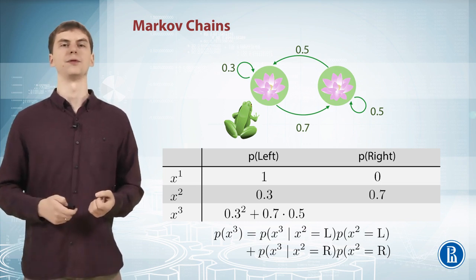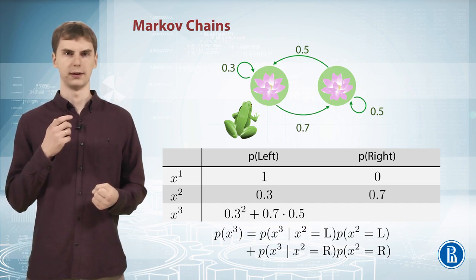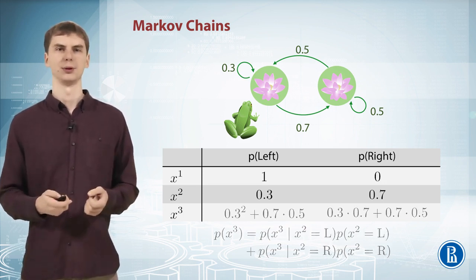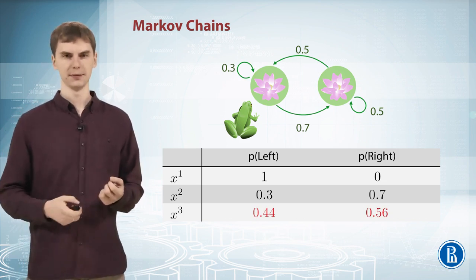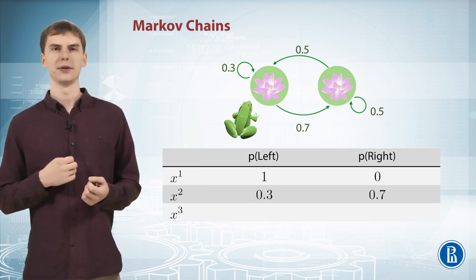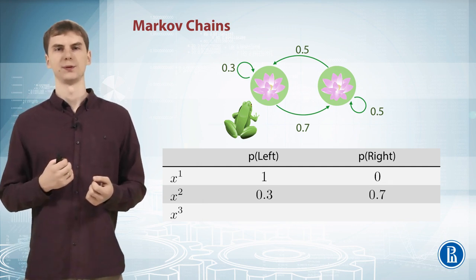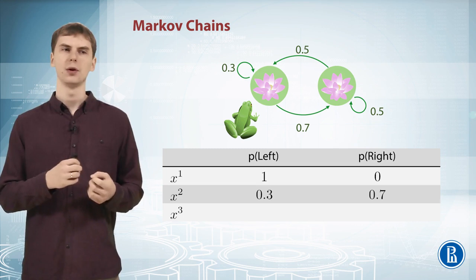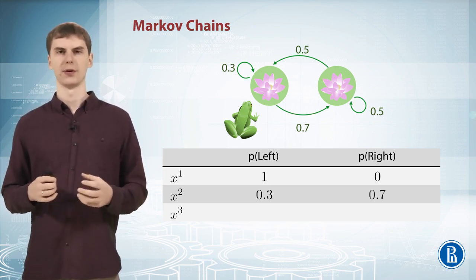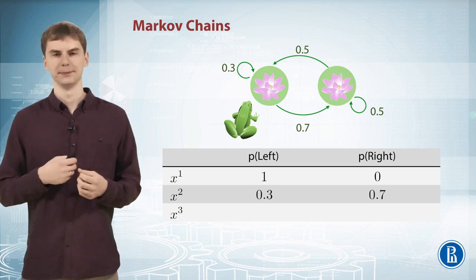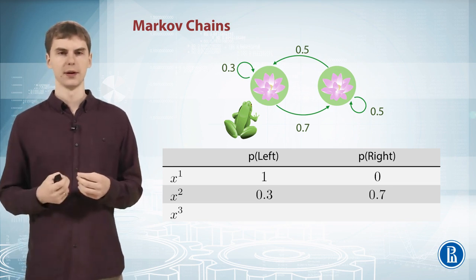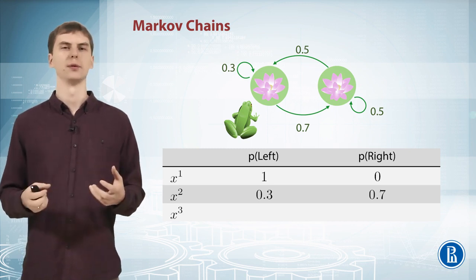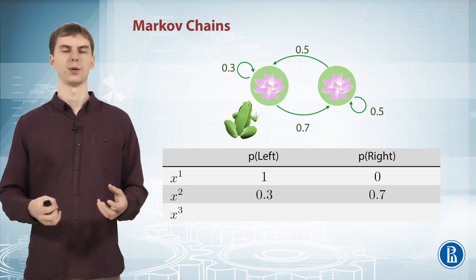We can write the same thing for being in the right state at time step 3, and we'll get numbers around 0.44 and 0.56. We can continue this table as long as we want and we'll find that it converges to numbers around 0.42 and 0.58. So after 1 million steps, the probability that the frog is on the left is almost exactly 0.42 and on the right almost exactly 0.58. This means that if we simulate our frog long enough and write down where it ends up at the millionth step, we get a sample from this discrete distribution — with probability 0.42 for left and 0.58 for right.